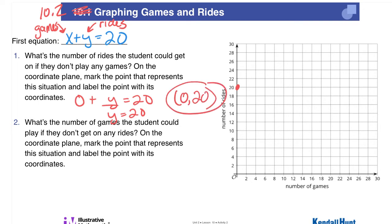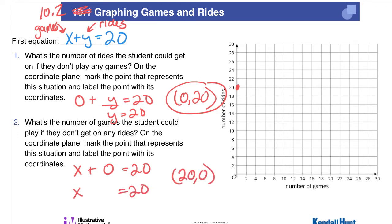In number 2, we're looking at what's the number of games the student could play if they don't get on any rides. What's the number of games — that's x — if they don't do any rides, that's y. To make this equation true, x would need to equal 20. Our point would be (20, 0), shown right here on the graph — 20 games and no rides.